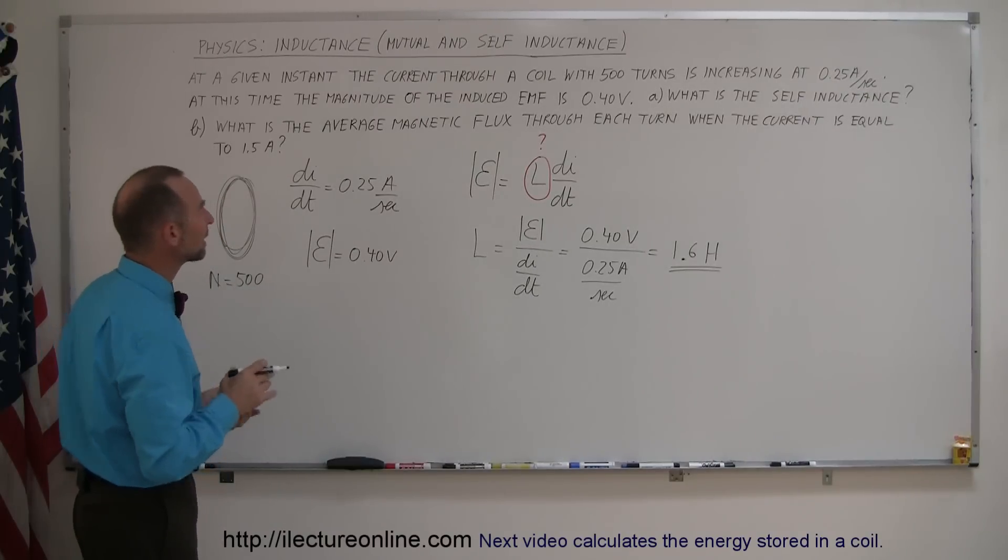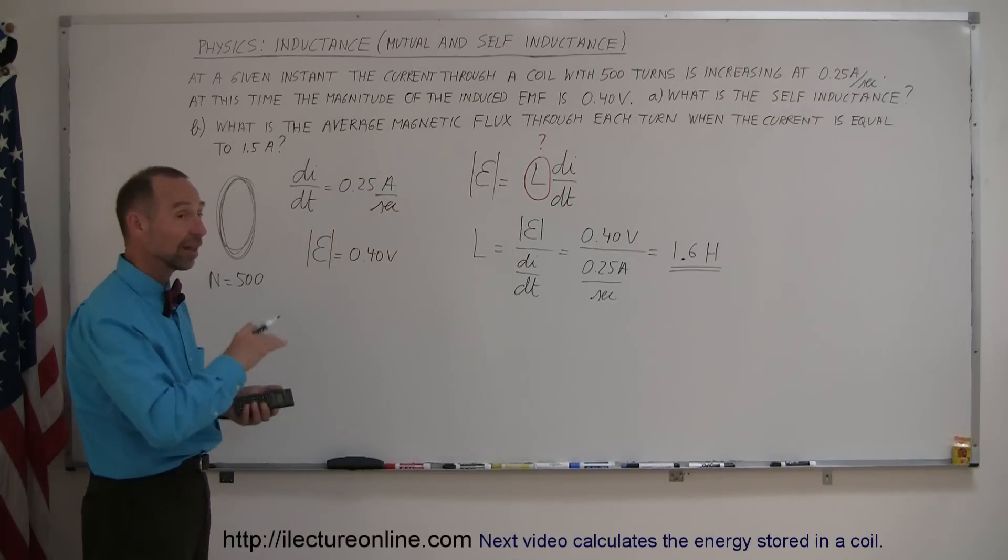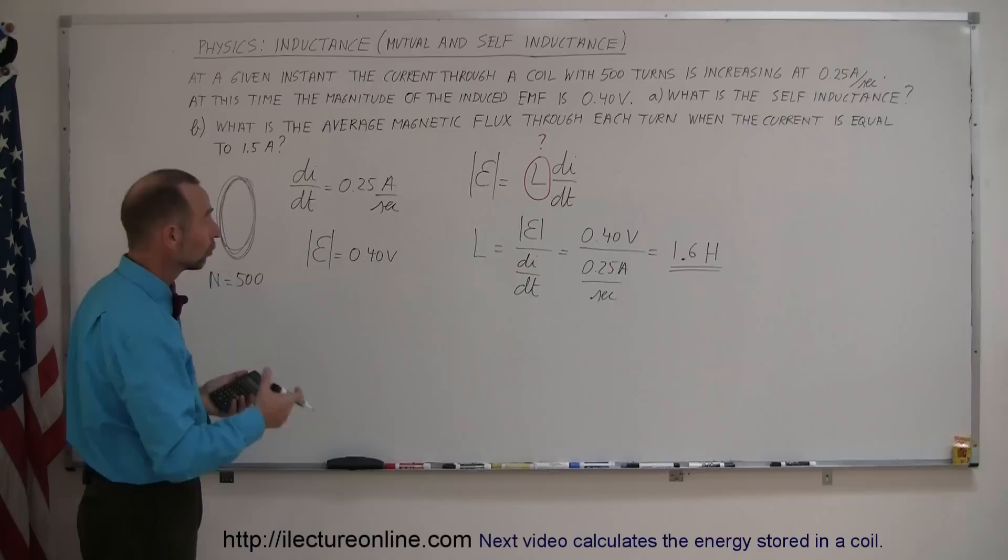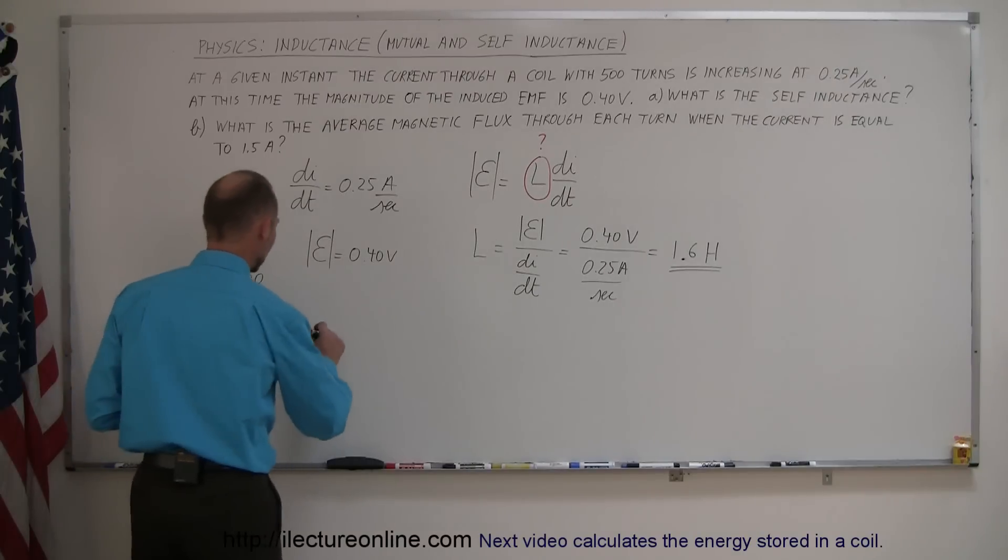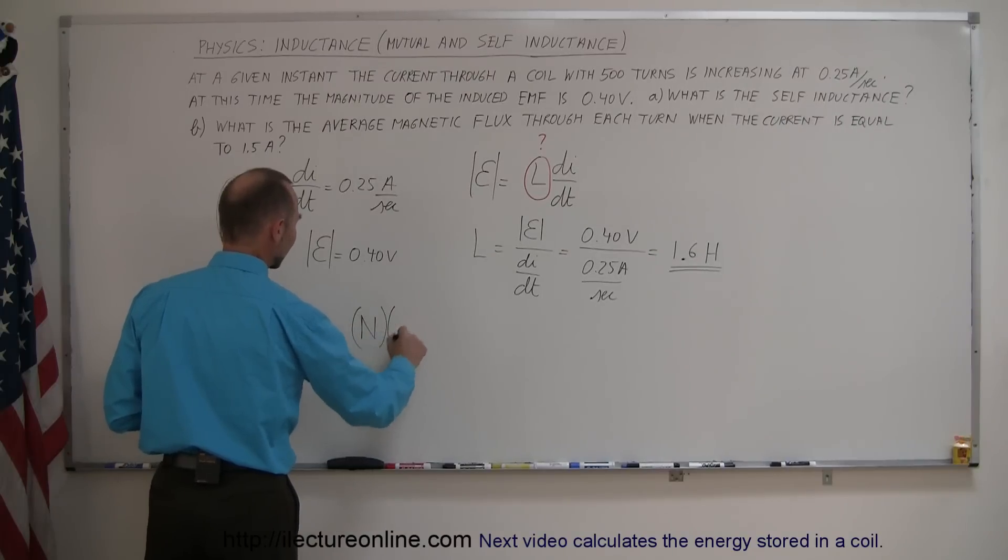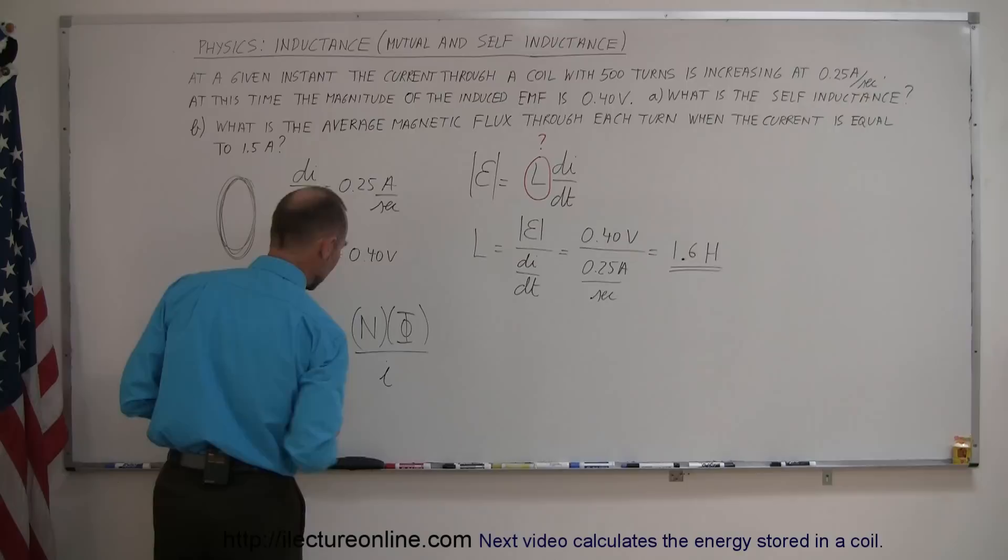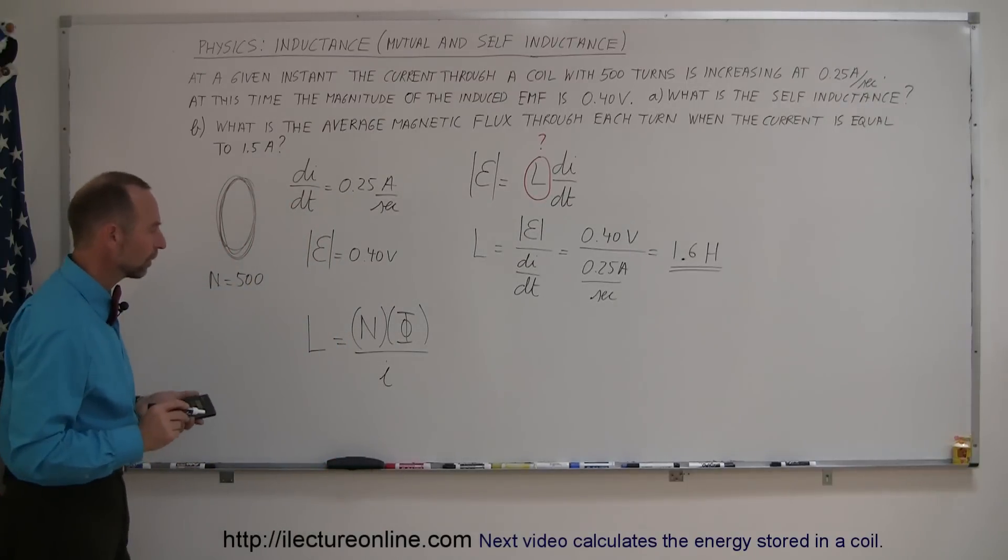Now, what is the average magnetic flux through each turn when the current is equal to 1.5 amps? So, we need an equation that determines the relationship between the self-inductance and the number of turns, the current, and so forth. And so, if I remember right, the self-inductance is equal to the number of turns times the flux divided by the current in the coil. So, let's do that.